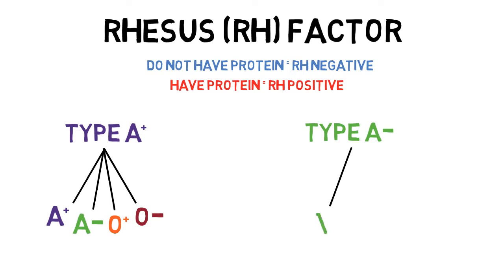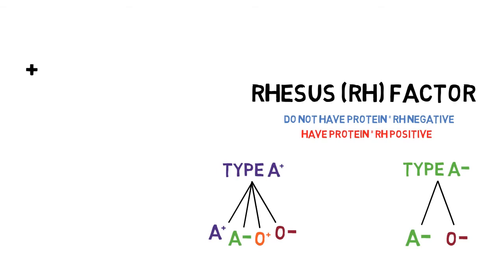While a type A negative could only receive A negative or O negative blood. So even a type AB negative could only receive O negative, A negative, B negative, and AB negative blood. In this way, the true universal donor becomes O negative, which can give blood to any blood type, whether positive or negative. Likewise, the actual universal recipient is AB positive, as it can receive blood from all eight possibilities, both positive and negative.